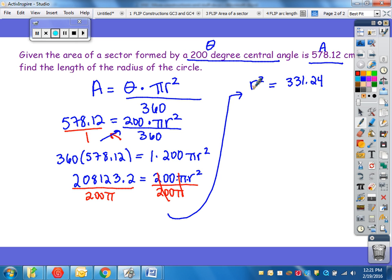All right, so I still have r squared, not just the radius, but the radius squared. So what I'm going to do now is the opposite of square, which is to take the square root of both sides,